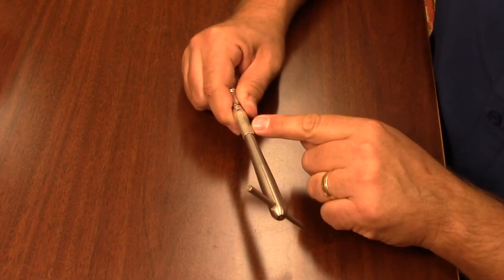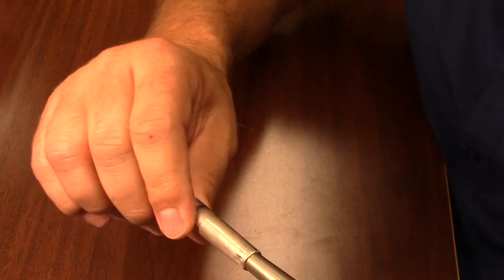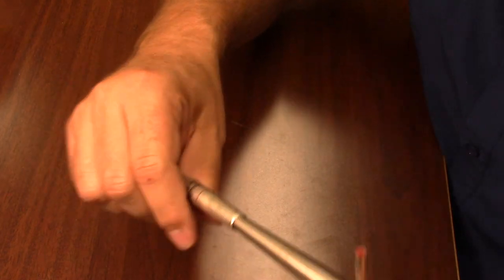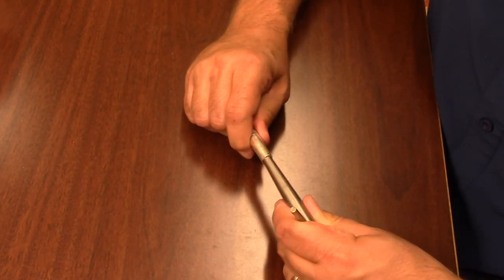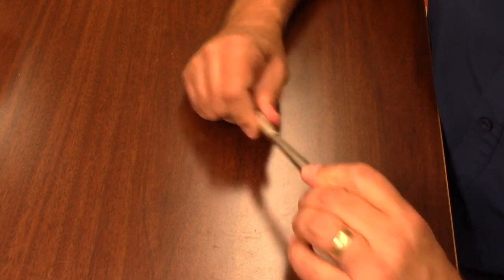What this is going to do is true the shape of the mouthpiece back out and you can see how already as we're going through this that mouthpiece is becoming rounder and more evenly placed.